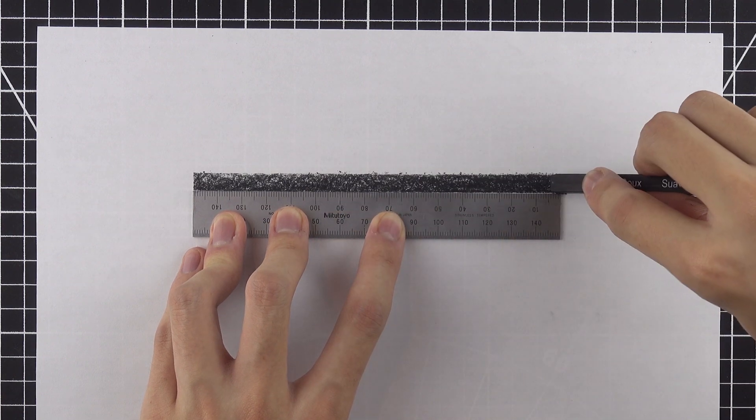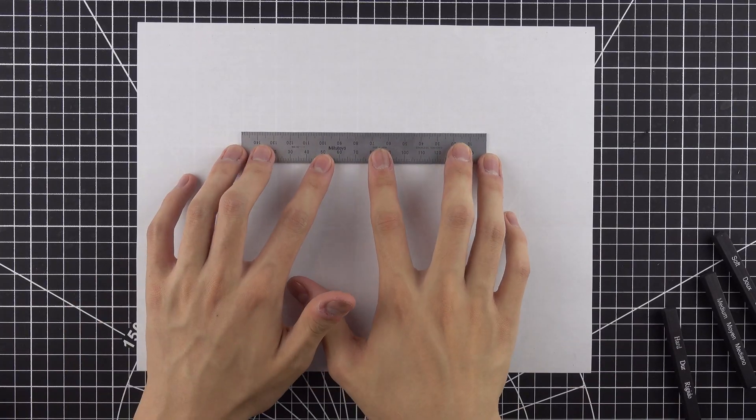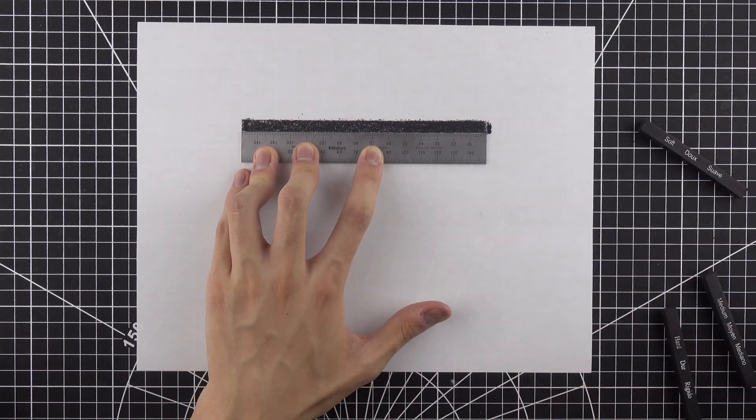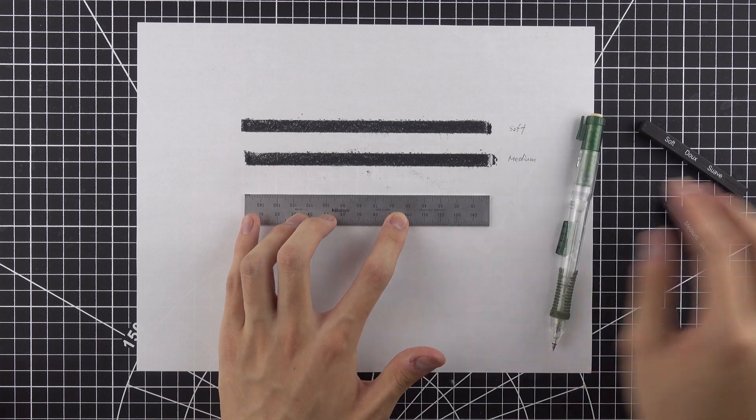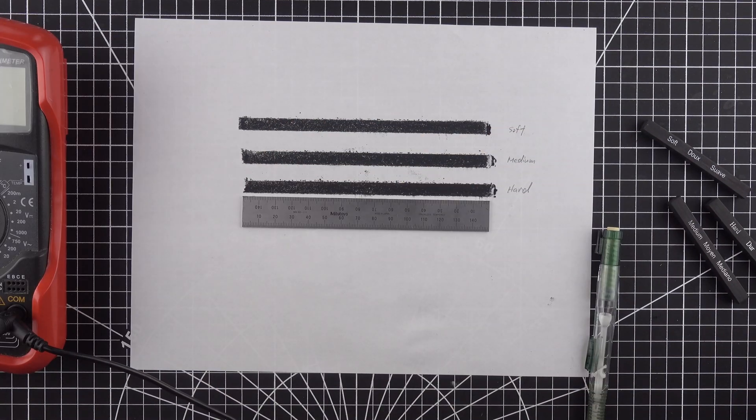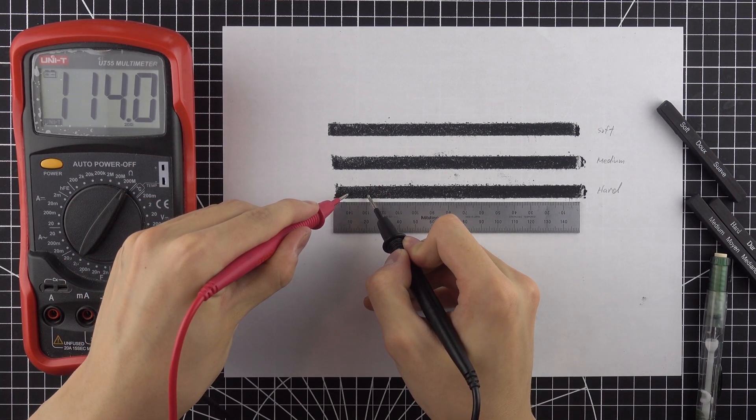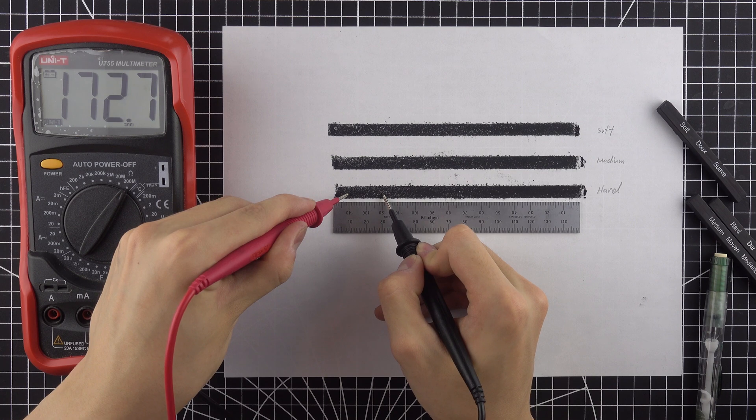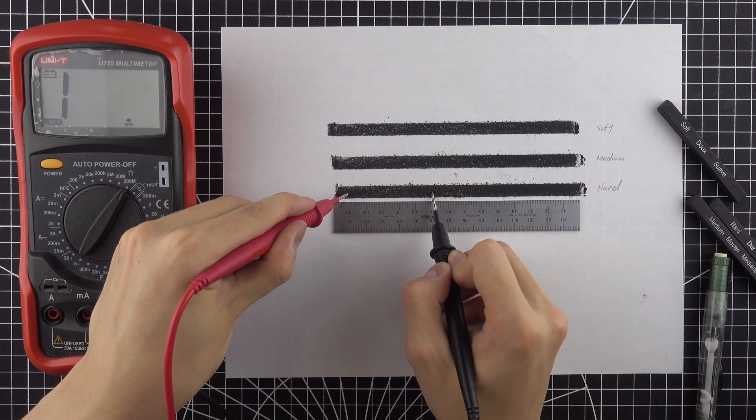I was able to plot out the resistance versus length graph for the hard charcoal. The soft and medium charcoal lines have much higher resistance values that exceeded the range of my multimeter, which was 200 mega ohms. The hard charcoal is the one with the most amount of clay hardener added. It is in fact the most conductive. This indicates that the fine carbon particles is a horrible conductor.